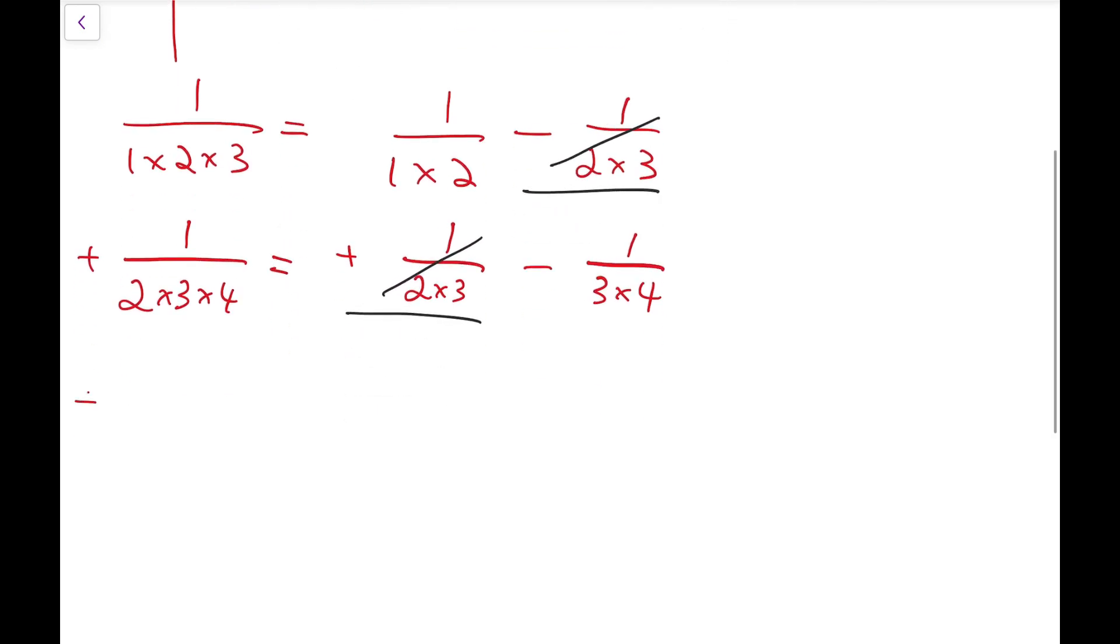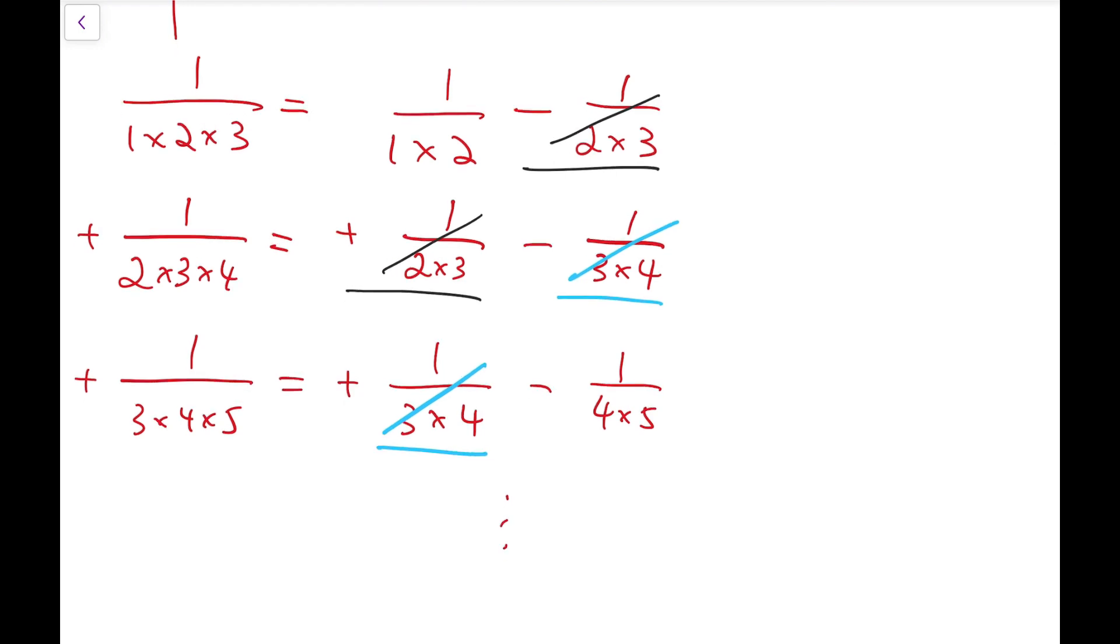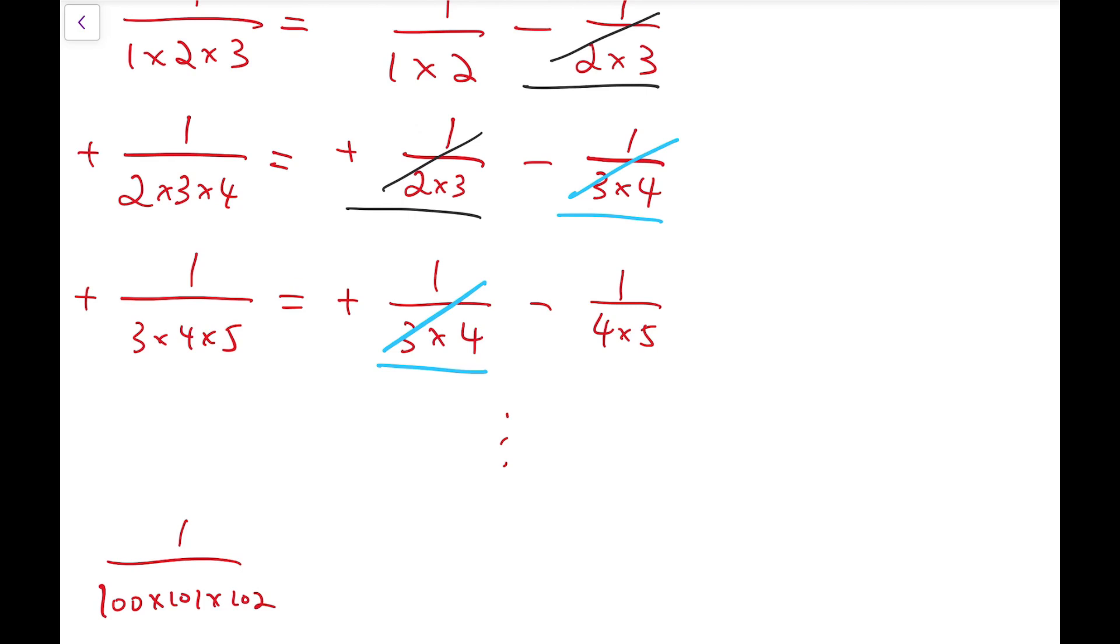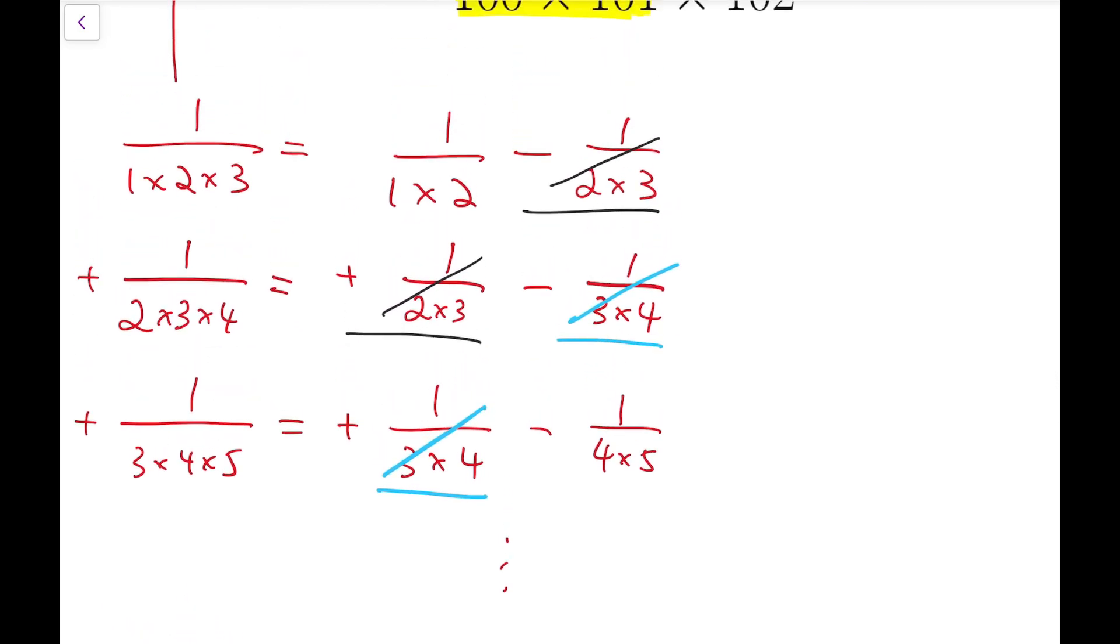Now for the next term, hopefully, it will become something of the form 1 over 3 times 4 minus 1 over 4 times 5. So again, we should aim to cancel out these two fractions as well. And this process should carry on all the way to the end at 1 over 100 times 101 times 102. But the question is whether this hypothesis is really true. So let's justify that in an algebraic way.